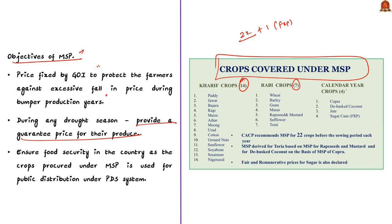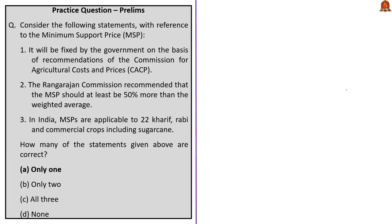I am displaying the list of crops for your reference, so please memorize them as they are directly asked in the preliminary. The first statement: MSP is fixed by the government on the basis of the recommendations of the CACP — this is correct. The second statement: the Rangarajan committee recommended that MSP should be at least 50% more than the weighted average — this is wrong because this recommendation was given by the Swaminathan Commission, not the Rangarajan Commission.